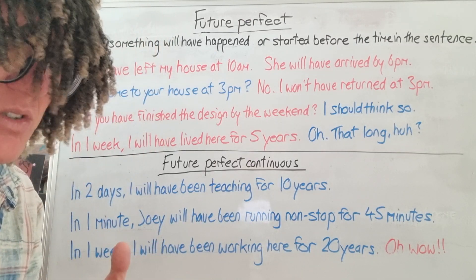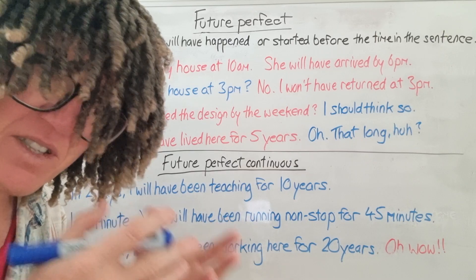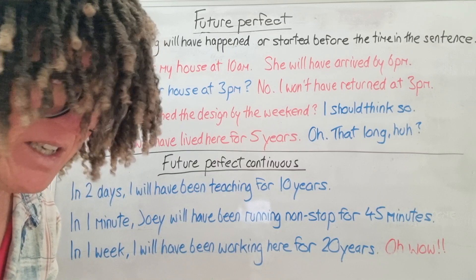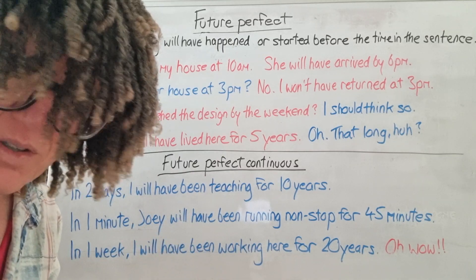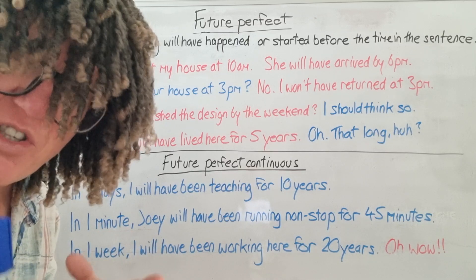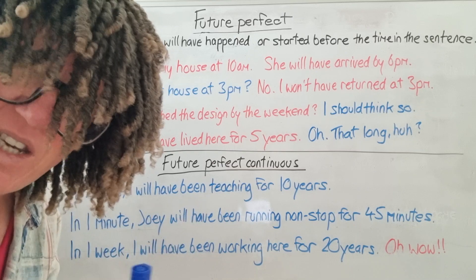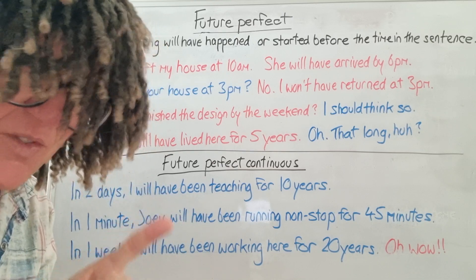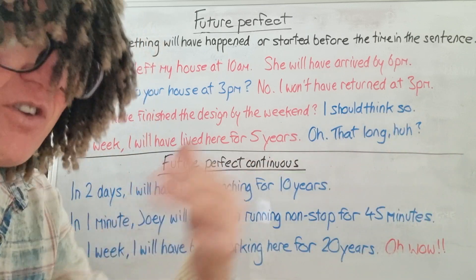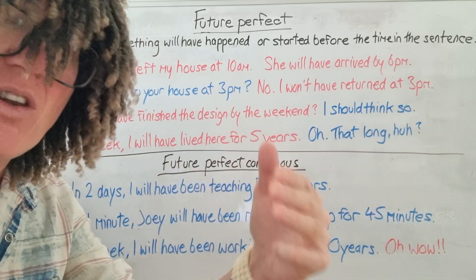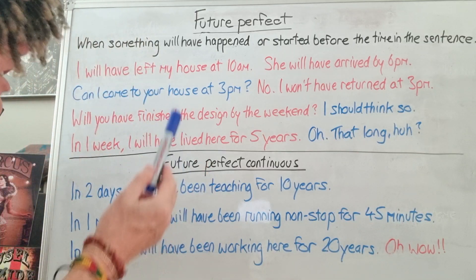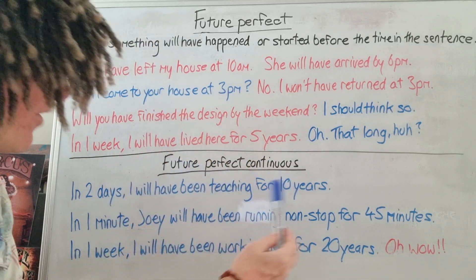For duration, we don't use perfect simple — we use perfect continuous. If it's present perfect: 'I have been teaching for 13 years', not 'I have taught'. So when you're talking about duration, you must use perfect continuous, unless it's a non-continuous verb. For example, 'I know him' — 'I have known him for 10 years', not 'I have been knowing him', because 'know' is a non-continuous verb. But if it's a continuous verb, use the continuous tense for duration.